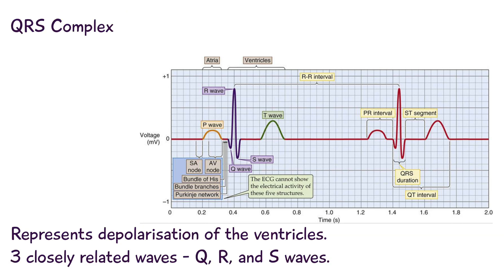We then have the QRS complex. The QRS complex represents the depolarisation of the ventricles. It appears as three closely related waves on the ECG, which you can see here.